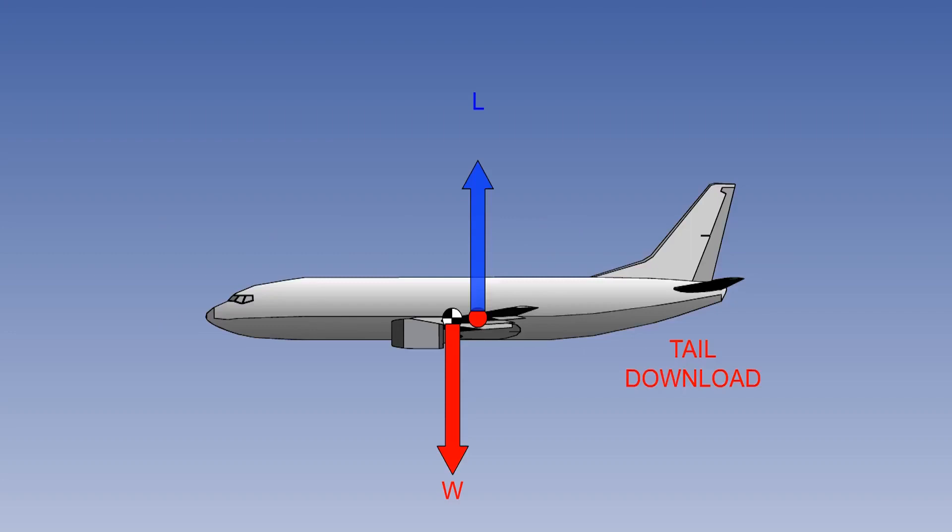The EASA regulation 25.103b states that VCL max is to be determined with the CG position that results in the highest value of reference stall speed. If the CG is in front of the centre of pressure, the CP, giving a nose-down pitching moment, as is usual, the tail plane must provide a download to maintain equilibrium, but the wing must produce more lift to balance the increased force of weight plus tail downforce.